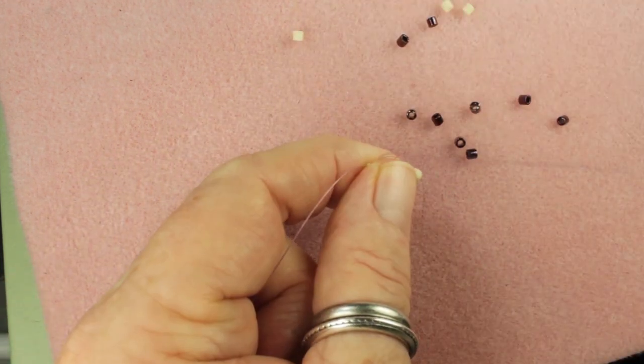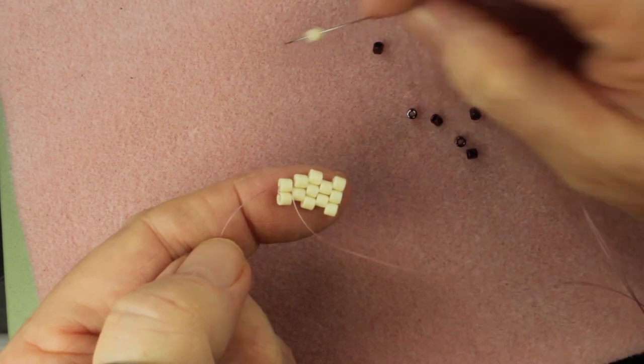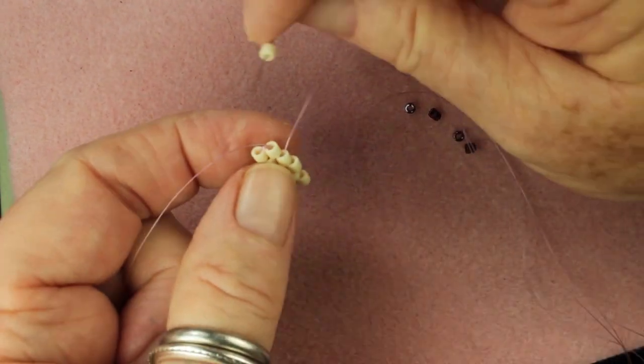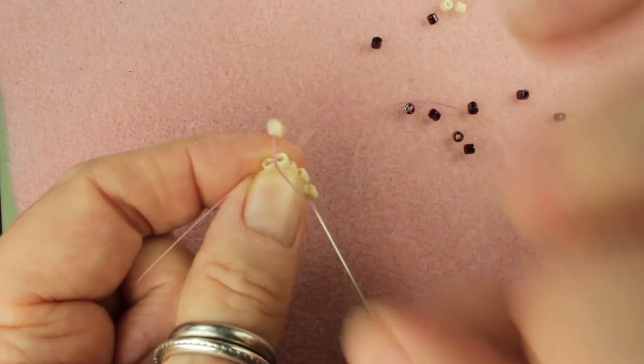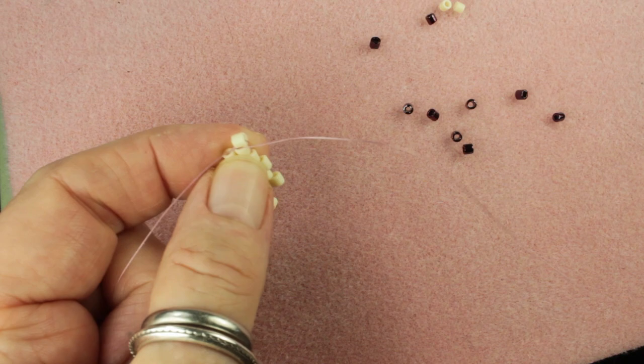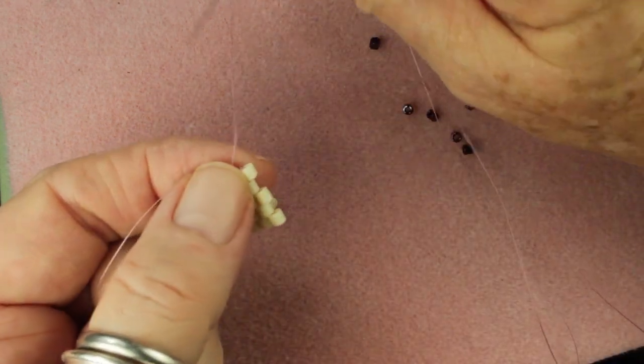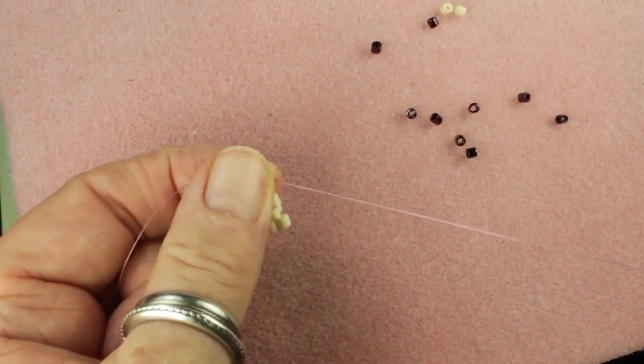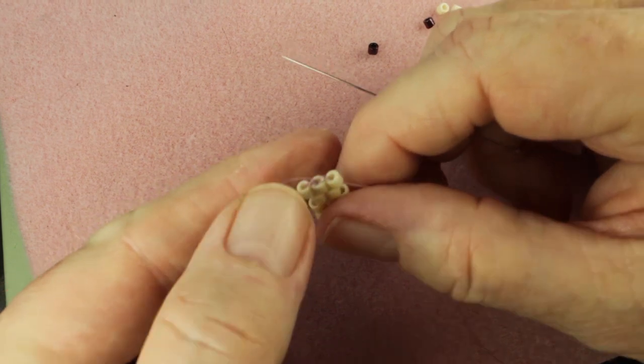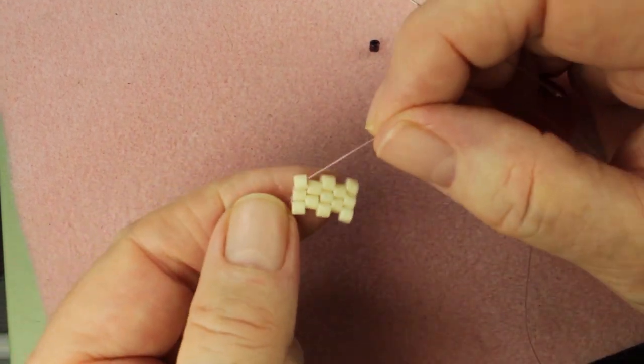And I can do the other way, which is to pick up a bead, go under the thread over here, let the bead fall into place, and then come out the bead. I don't like this as much because it does tend to bulk up this side, but if you're going to be putting some edging on or some picots, it's okay.